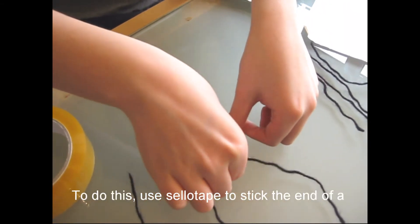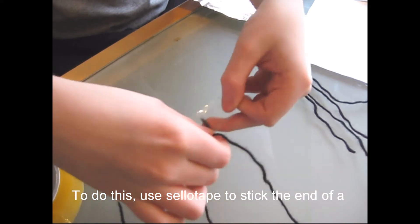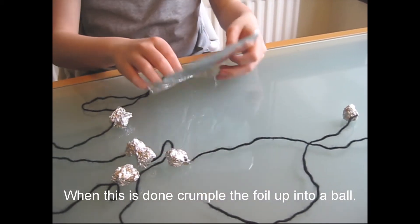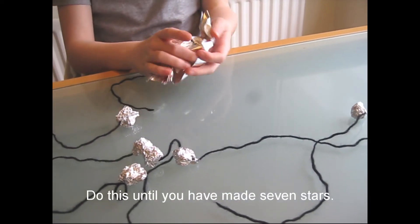Now make the stars. To do this, use sellotape to stick the end of a piece of wool to the center of a piece of tin foil. When this is done, crumple the foil up into a ball. Do this until you have made seven stars.